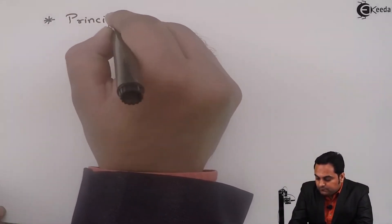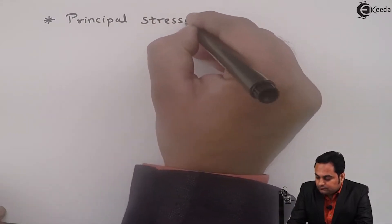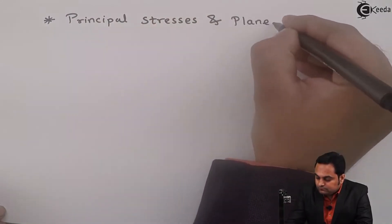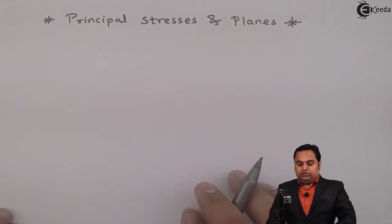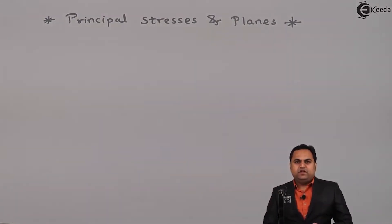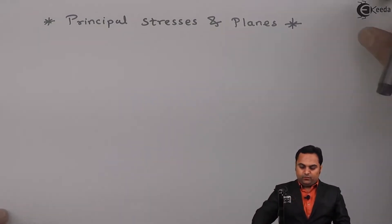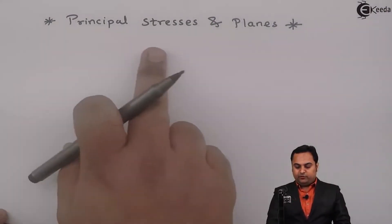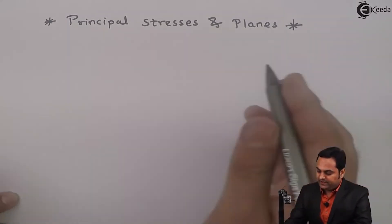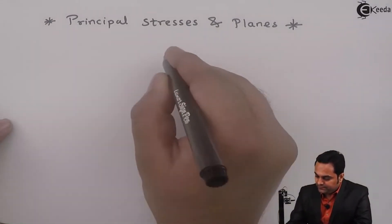Hello friends, here we are starting a new chapter in Strength of Materials and the name of the chapter is Principal Stresses and Planes. It is sometimes also called Principal Stresses and Strains. Now when we are talking about principal stresses and planes, first I'll give an example.